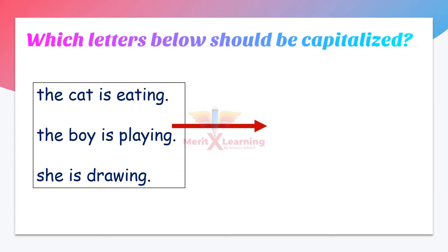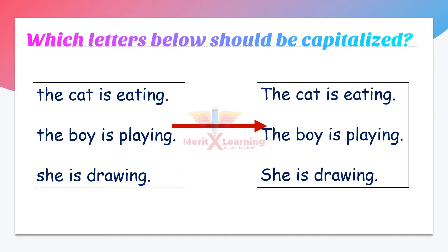Sentence number one: 'The cat is eating.' Remember, the first letter of the first word is capitalized. Number two: 'The boy is playing.' The first letter of the first word is capitalized, so 'T' is capitalized. Number three: 'She is drawing.' So the first letter of the first word is capitalized.